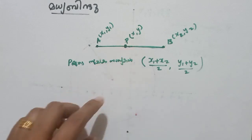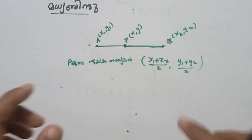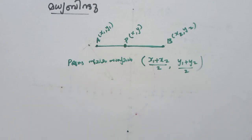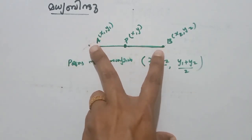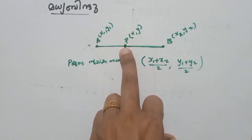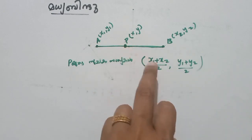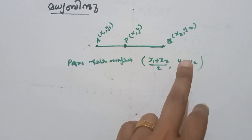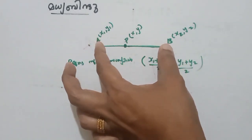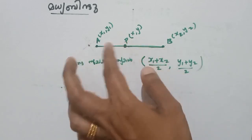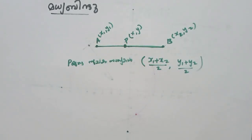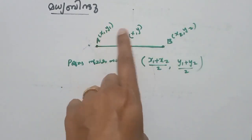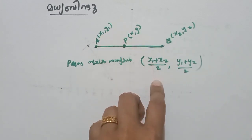P is the midpoint. We have two formulas. We have the distance formula: root of (x2 minus x1) all squared plus (y2 minus y1) all squared. And we have the midpoint formula: x1 plus x2 by 2, y1 plus y2 by 2. We have learned this.